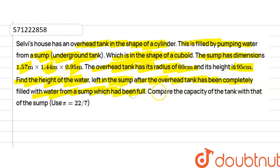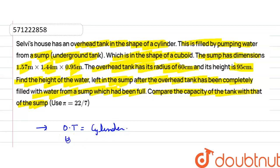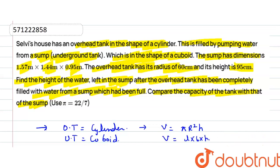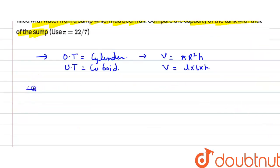We also need to compare the capacity of the tank with that of the sump. The overhead tank is a cylinder and the underground tank is a cuboid. The volume of a cylinder is π r² h and the volume of a cuboid is length × breadth × height. Since the underground tank fills the overhead tank, the amount of water that travels from the underground tank equals the capacity of the overhead tank.